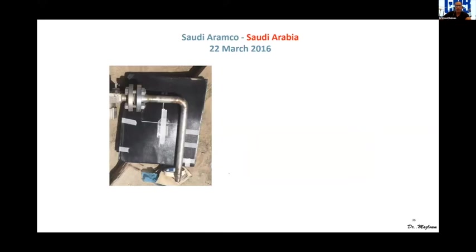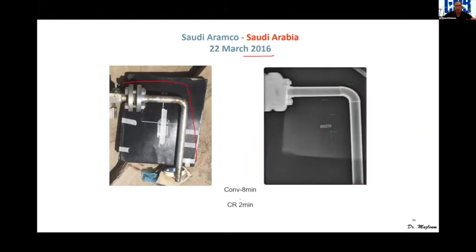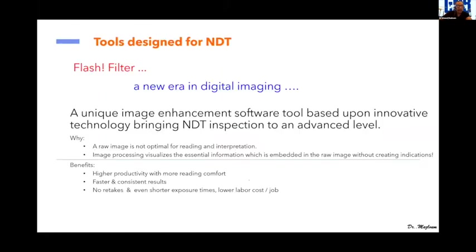At Saudi Aramco in 2016, practical demonstrations showed CR inspecting an elbow with clear images. The IQI showed wires 7 or 8 clearly visible, allowing easy compliance with codes and specifications. Time saving was 75% compared to conventional radiography.